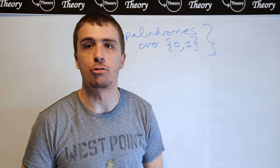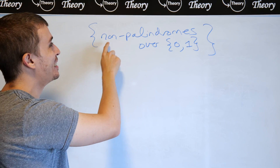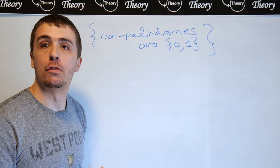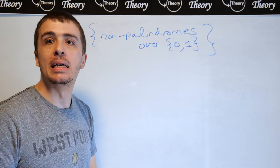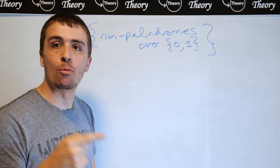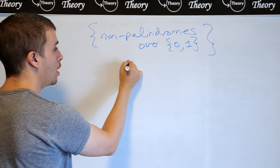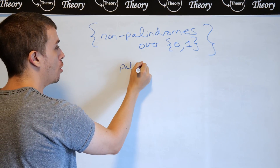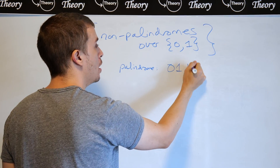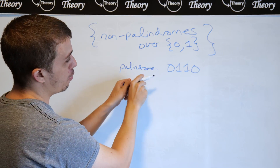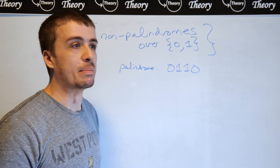Let's make a context-free grammar for non-palindromes over {0, 1}. A palindrome is a string that is exactly the same when read forwards and backwards. For example, a palindrome over zero and one could be 0110 — read forward and backward, it's identically the same string.